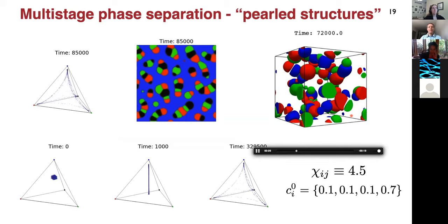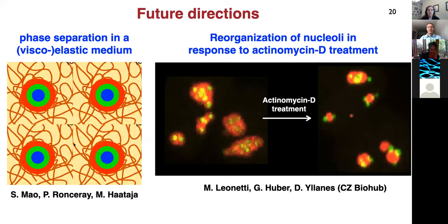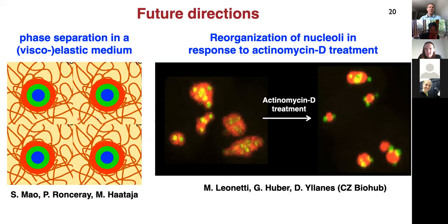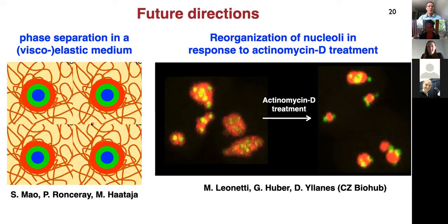In the future, we are also working on how these phases interact when phase separation happens inside a viscoelastic medium rather than a purely liquid one, as often occurs in cells. We're studying how interaction of phase separation with a viscoelastic environment can affect coarsening and select droplet sizes, as demonstrated in experiments by Eric Dufresne. We're also working with people at the Chan Zuckerberg Biohub to study how drug treatment can lead to rearrangements of phases in the nucleolus.